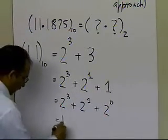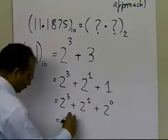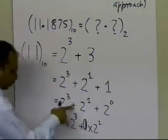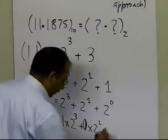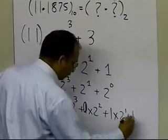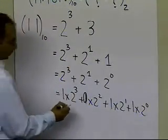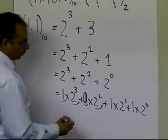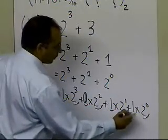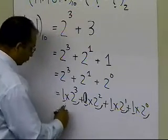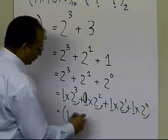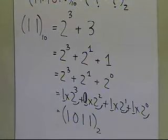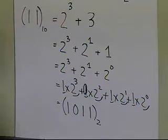Now writing down the coefficients: the coefficient of 2³ is 1, the coefficient of 2² is 0 (since there is no 2² in the representation), then 1 times 2¹ plus 1 times 2⁰. So the binary placements give us 1, 0, 1, 1 — which is the equivalent binary number for 11 in base 2, the same result as in the previous segment.